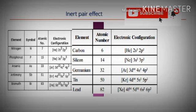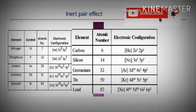See the group 14 elements: carbon, silicon, germanium, tin, and lead. Germanium, tin, and lead will show high inert pair effect compared to carbon and silicon, because of 4s, 5s, and 6s electrons respectively. These three elements show high inert pair effect because these S electrons are attracted more towards the nucleus, and that is the reason they are not participating in bond formation.